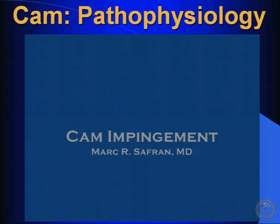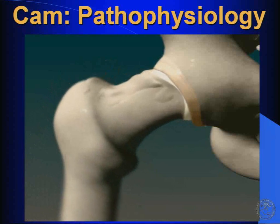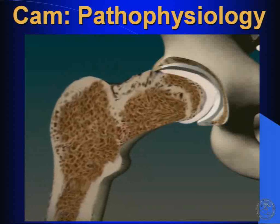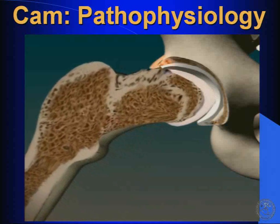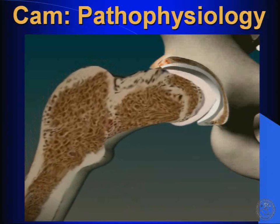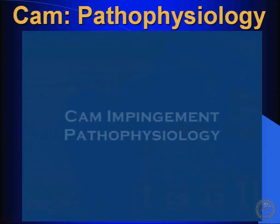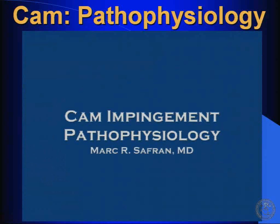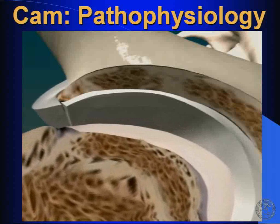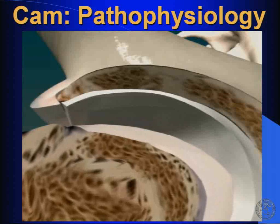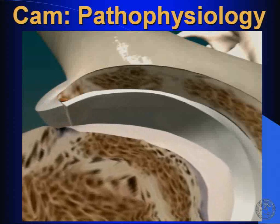The way we think about the pathophysiology of CAM impingement is that as you try to bring the leg up and you have loss of this offset of the femoral head and neck junction, this leads to labral chondral separation. Then it abuts the articular cartilage, leading to softening and potentially delamination, and ultimately may lead to loss of the articular cartilage. As the lesion comes underneath, you get a labral chondral separation and then the abutment against the articular cartilage that would potentially lead to a delamination type of injury.